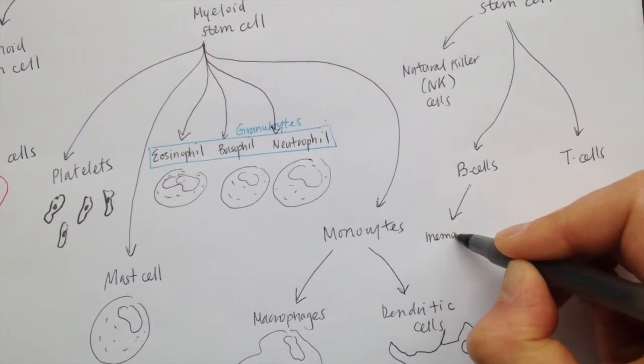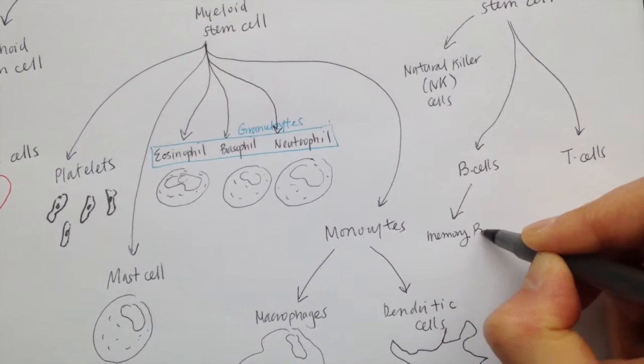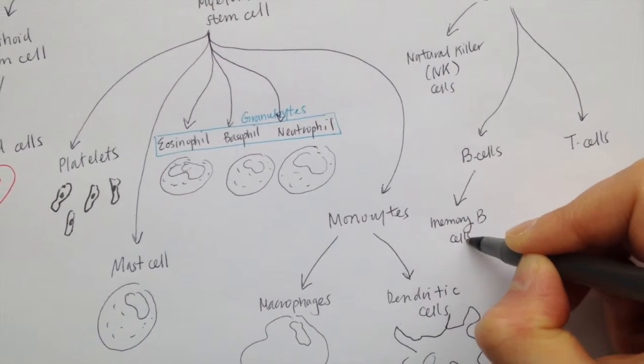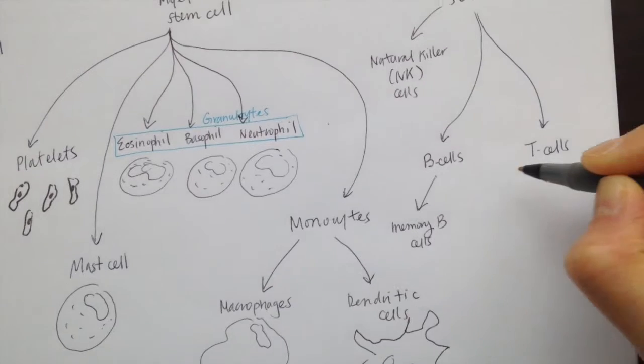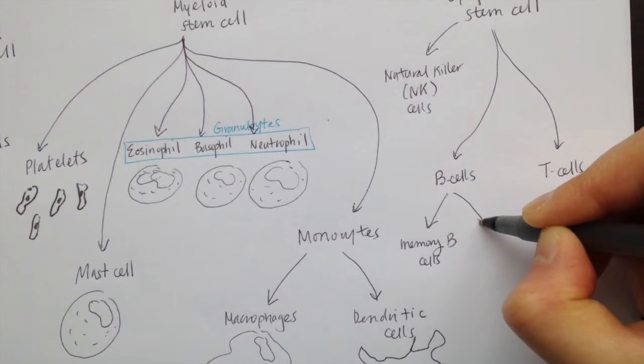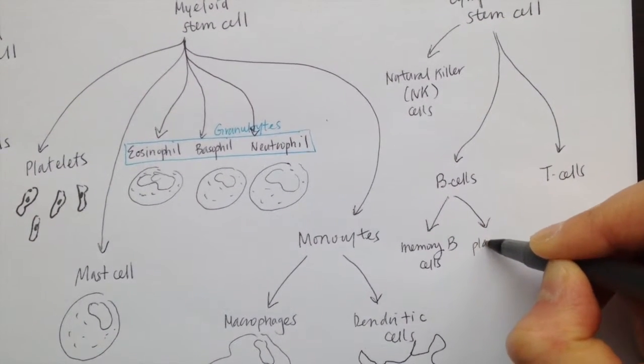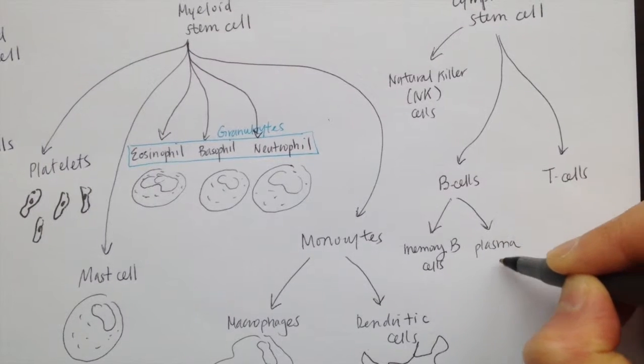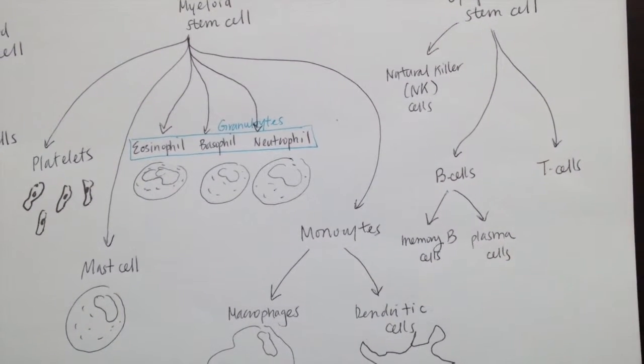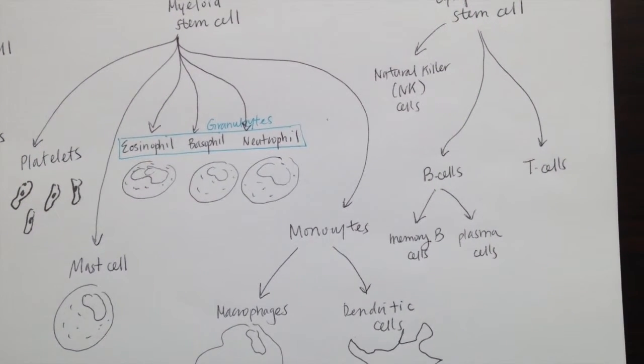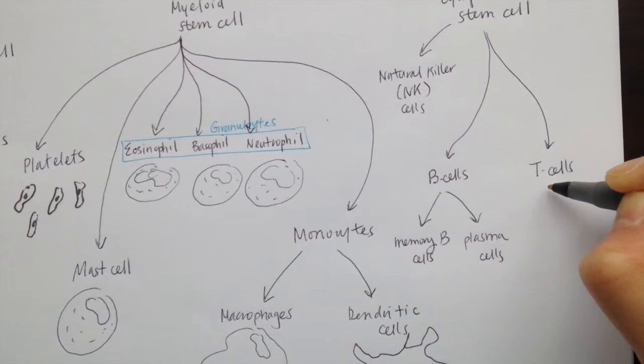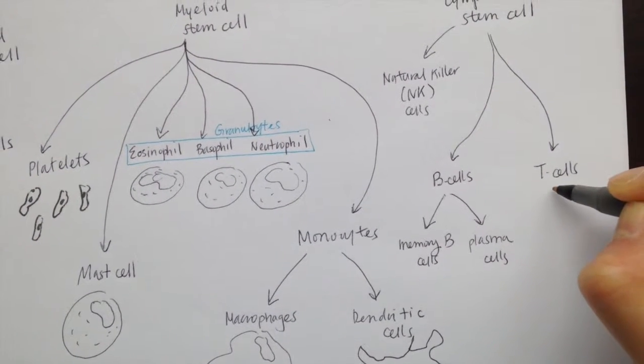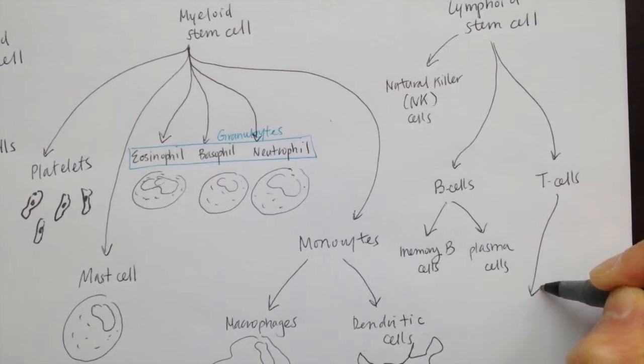T cells can differentiate into cytotoxic T cells, helper T cells, and memory T cells. Cytotoxic T cells get messages from permanently damaged host cells that are asking to be killed and will kill them. Helper T cells secrete cytokines that help to direct the host cell and other immune cells. They do not directly kill other cells.